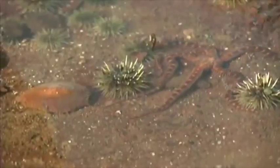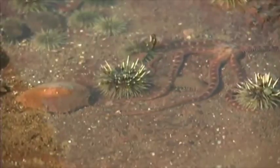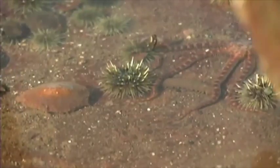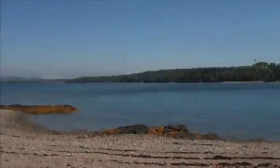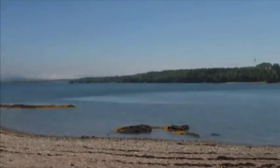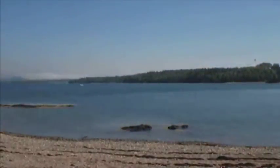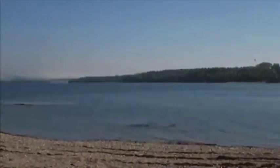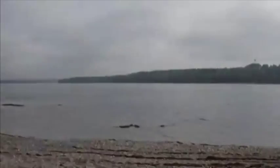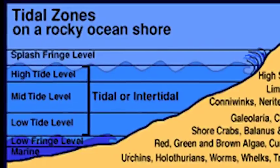At ebb tide, the uppermost layers of intertidal life are exposed to air, wide temperature fluctuations, intense solar radiation, and desiccation. The lowest fringes on the intertidal shore may be exposed only briefly before the rising tide submerges them again.